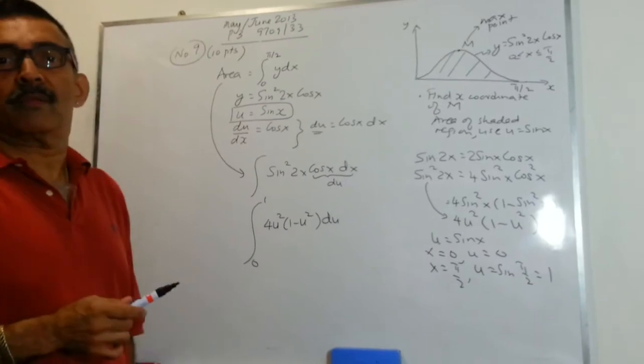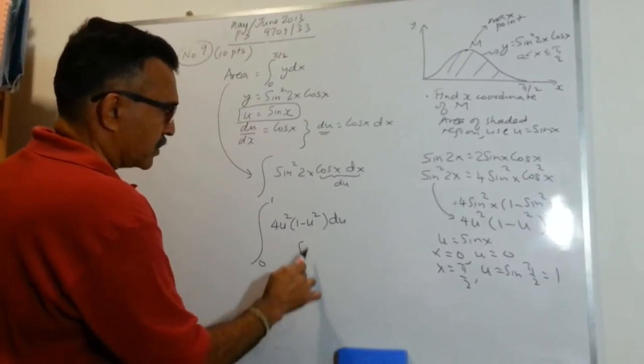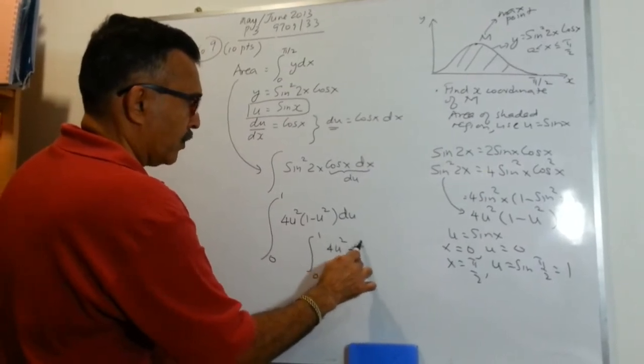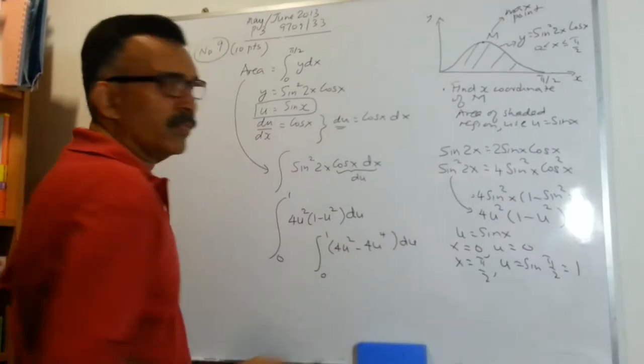We have got everything now in terms of u. So let's open it up. We are integrating from 0 to 1. We have 4 u squared minus 4 u to the power of 4 du.